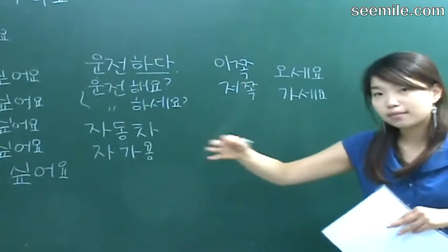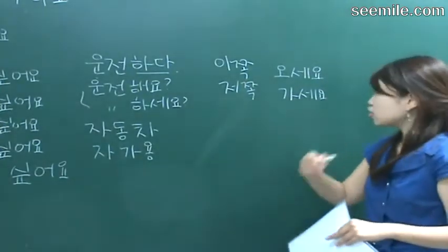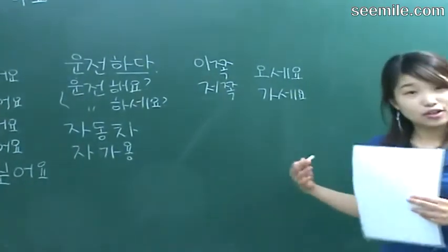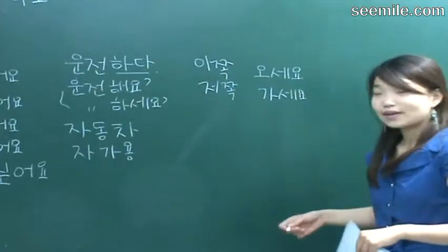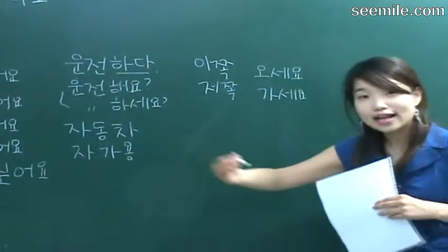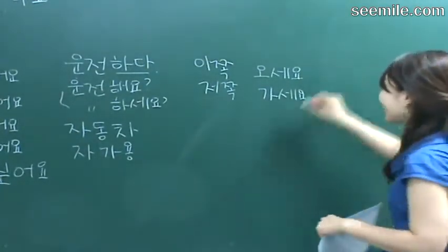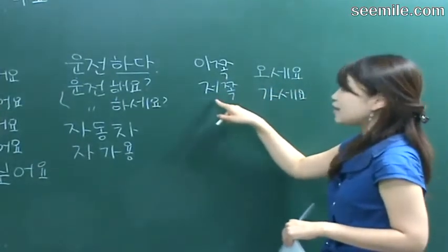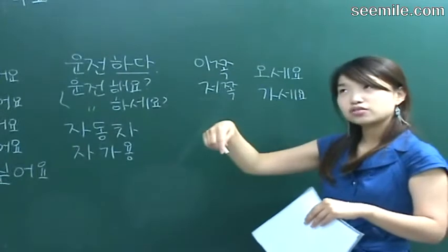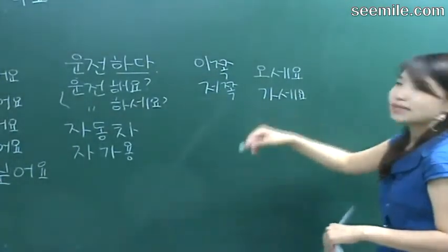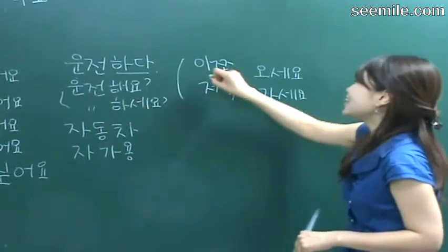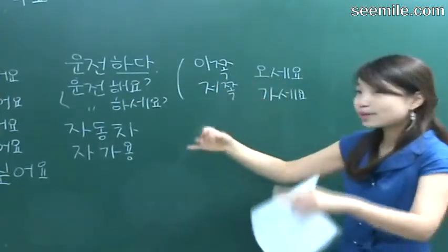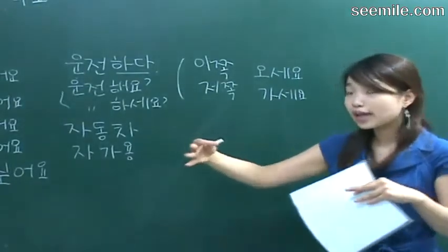Please go this way: 저쪽으로 가 sounds rude — get away. So say 저쪽으로 가세요 — it sounds better. 오세요 — please come this way. 저쪽으로 오세요. 저쪽으로 가세요 usually. 이쪽으로 오세요 — this way. 저쪽 is that way. 오세요 — please come; 가세요 — please go.